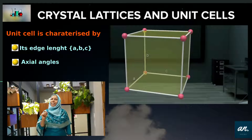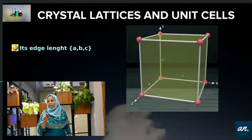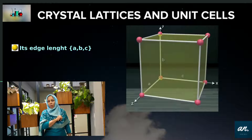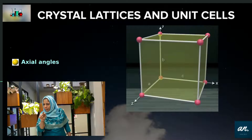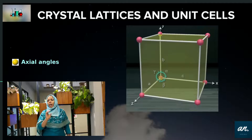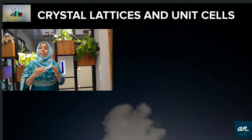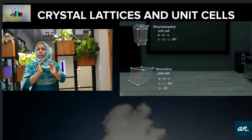The unit cell has parameters including edge lengths and interfacial angles. The axes of the unit cell have interfacial angles: alpha, beta, and gamma. These angles define the geometry of the unit cell along its axes.